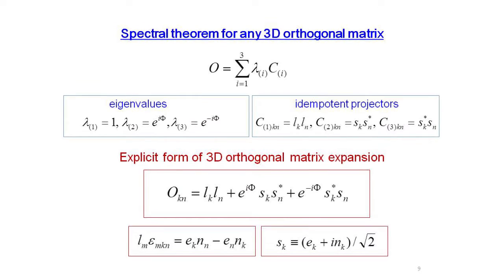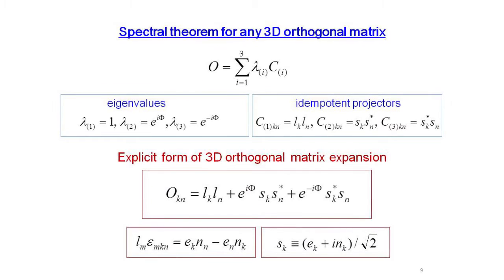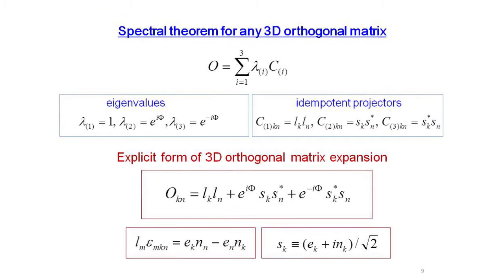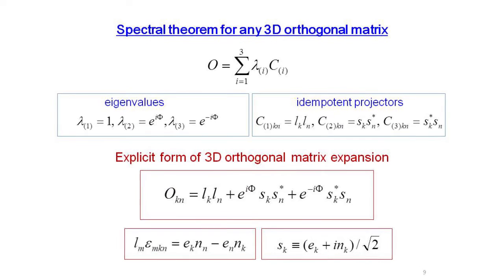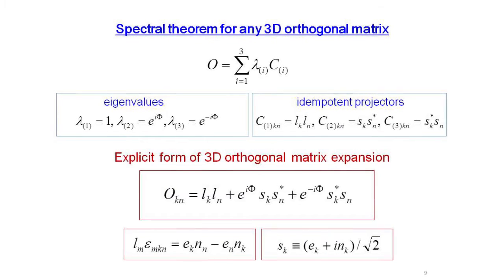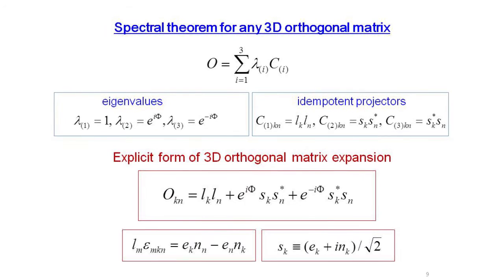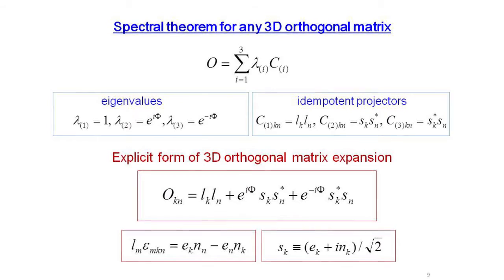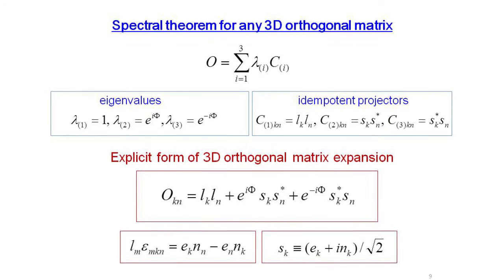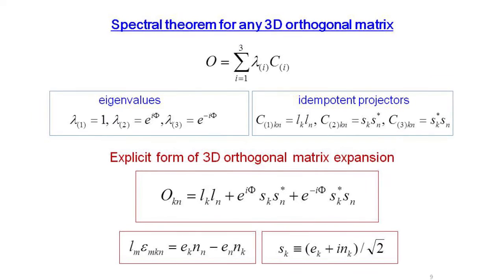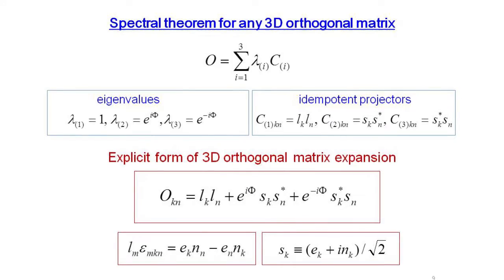Within this investigation, we, probably for the first time, demonstrate analytical expansion of an arbitrary three-dimensional matrix rotation as a finite series of idempotent projectors with eigenvalues of the matrix as coefficients. Thus, the spectral theorem proved in matrix algebra is exposed in explicit form for any three-dimensional orthogonal matrix.